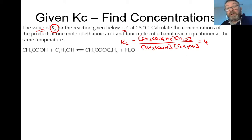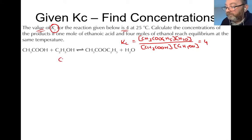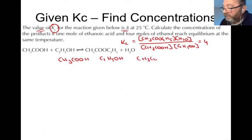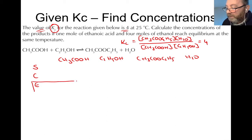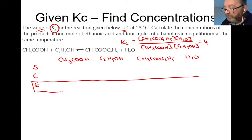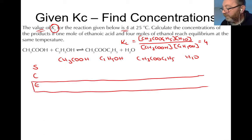Then carry on exactly as before: write down your four species — CH₃COOH, C₂H₅OH, the ester CH₃COOC₂H₅, and H₂O. Set up starting quantities, change, and equilibrium rows. The equilibrium line is all-important — that's why I always put it in a box, to remind me that those values go into Kc later.